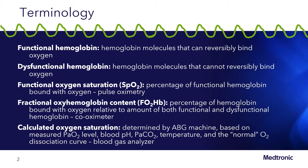Functional hemoglobin are hemoglobin molecules that can reversibly bind to oxygen, whereas dysfunctional hemoglobin are hemoglobin molecules that cannot reversibly bind to oxygen. An example of this would be carboxyhemoglobin, or hemoglobin bound to carbon monoxide.